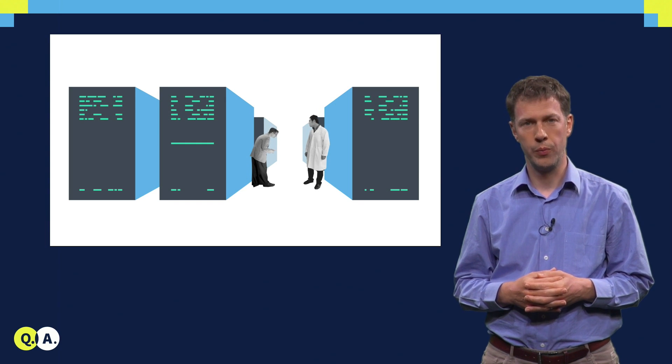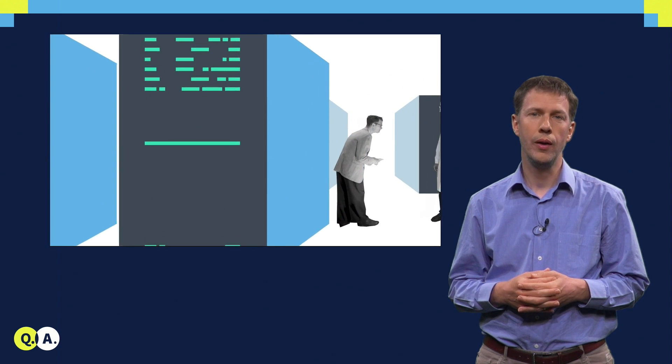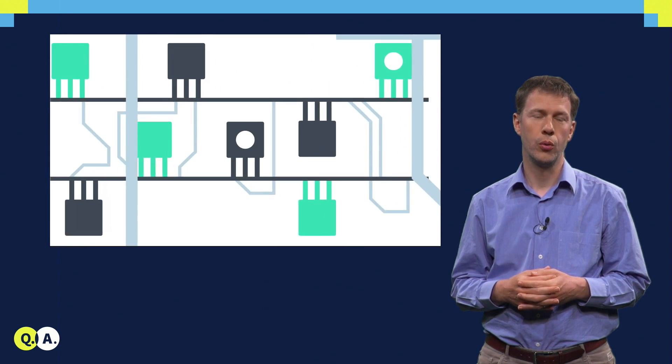If we look at how a transistor is built, essentially it is a switch that controls the flow of electrons between two contacts, using the voltage applied to a single gate.